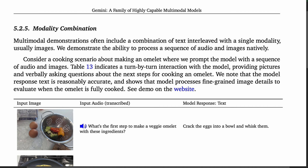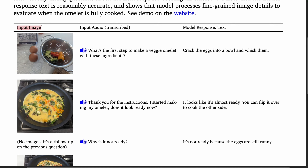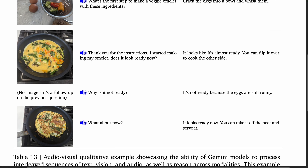There's an interesting demo for modality combination, where the model is prompted with input images and input audio. Given an image and the audio 'What's the first step to make a veggie omelette with these ingredients?', the model outputs text: 'Crack the eggs into a bowl and whisk them.' The user then responds with a new image and speech saying 'Thank you for the instructions. I started making my omelette — does it look ready now?' I'd like to pause here to commend the user for courageously trusting the model to assess whether eggs are properly cooked. Gemini says 'It looks like it's almost ready — you can flip it over to cook the other side.' The user asks 'Why is it not ready?' and, like a master chef, the model responds 'It's not ready because the eggs are still runny.' Finally, the user provides another image and asks 'What about now?' Gemini responds: 'It looks ready now. You can take it off the heat and serve it.'